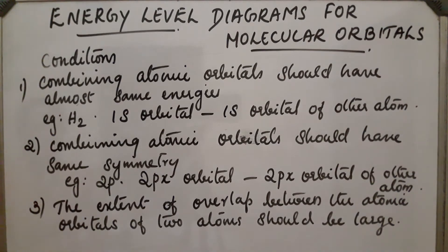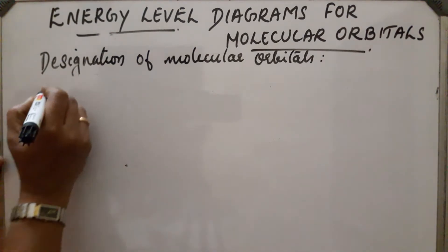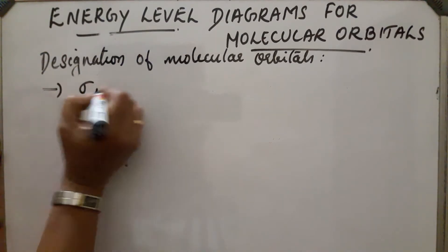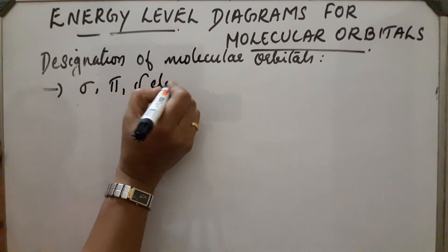So these are the different conditions. Next, we are discussing the designation of molecular orbitals. Atomic orbitals are designated as s, p, d, or f. Similarly, molecular orbitals are designated as sigma, pi, delta, etc.